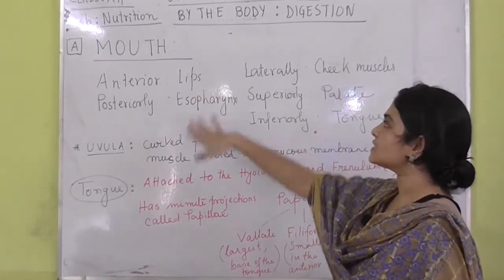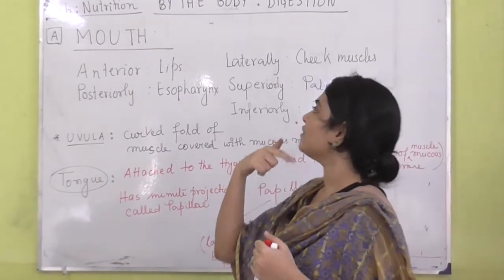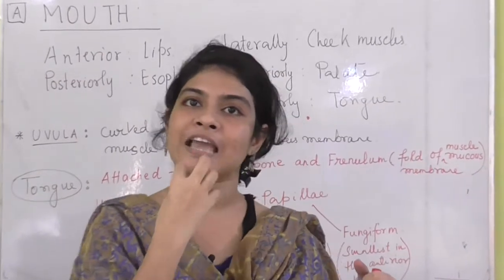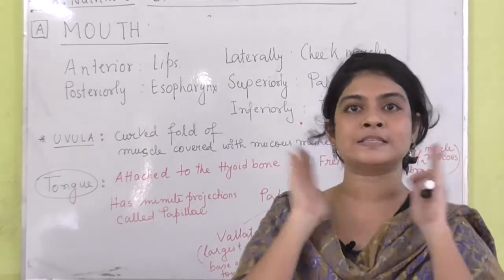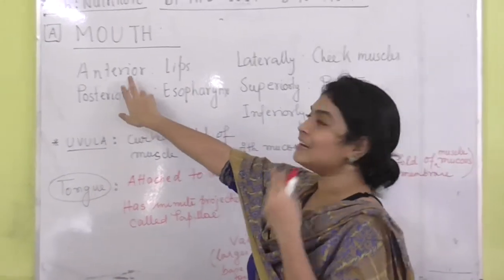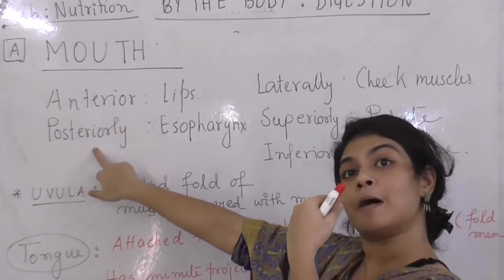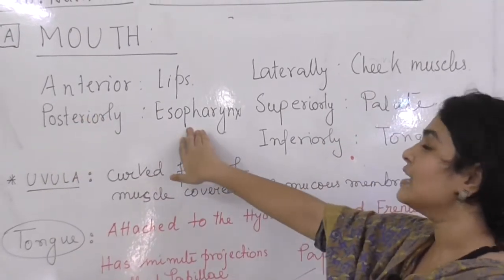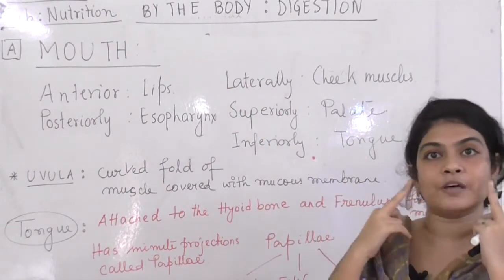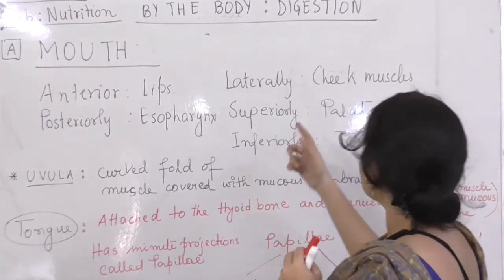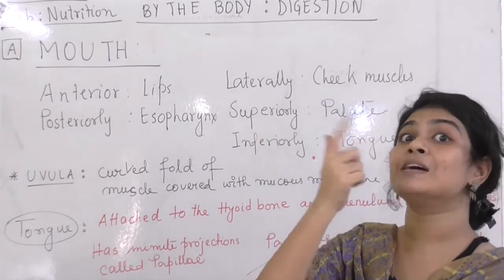Now we are moving to the first part of the digestive system, the mouth, also known as the buccal cavity. Anteriorly, the mouth is lined by our lips. The posterior part is continuous to the esopharynx. The lateral parts include our cheek muscles. The superior part of the mouth includes the palate.